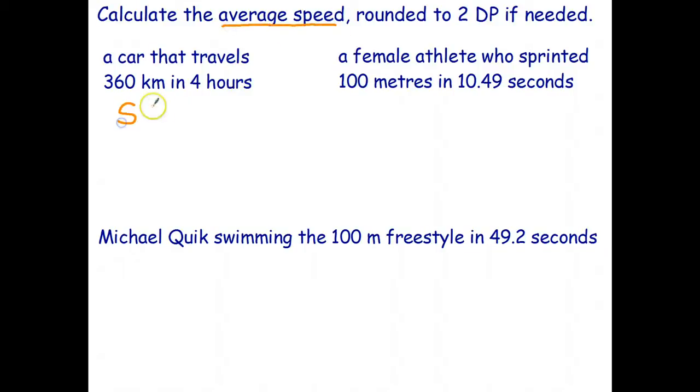So we just write speed equals distance over time, or distance divided by time. I prefer to use capital letters for distance, speed, and time. 360 goes on top, 4 hours goes on the bottom. 360 divided by 4 is 90, and the units are kilometers per hour. So you can usually get your units just by going back and reading the question.